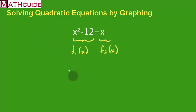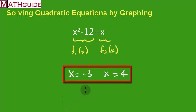So we found out that x equals negative 3 and x equals 4. And there you go. Those are our two solutions to the problem.